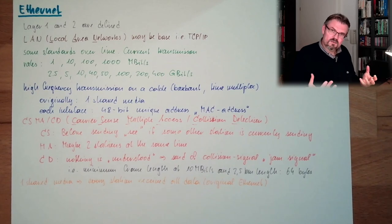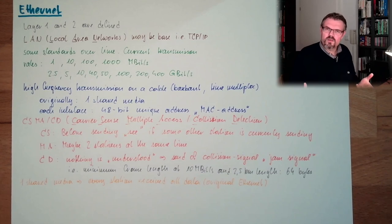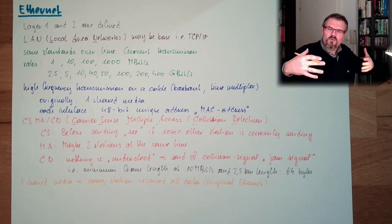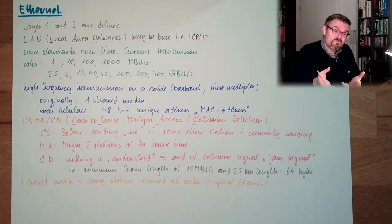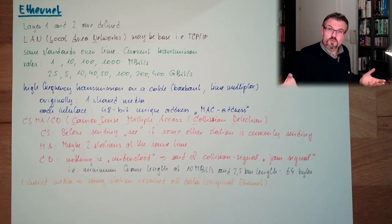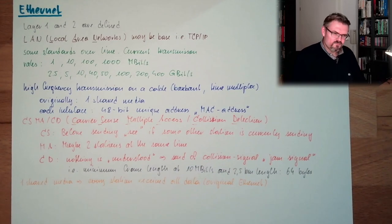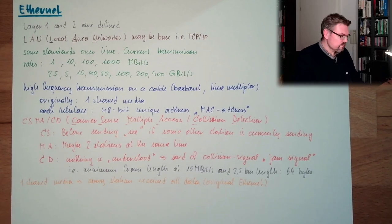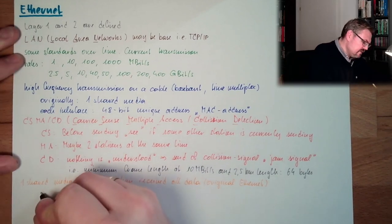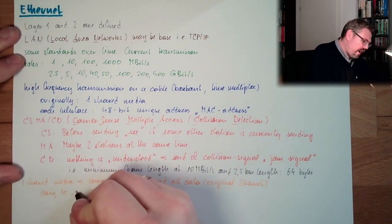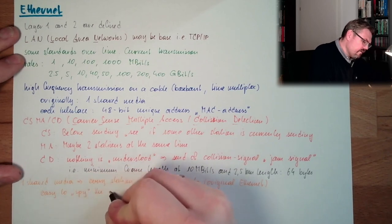If there are hubs and repeaters in the network, this does not change anything, because hubs and repeaters simply repeat the signal on every cable. So there is no change. This also means it is very easy to listen to the conversations — it's easy to spy on a conversation in the original Ethernet era.